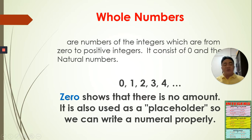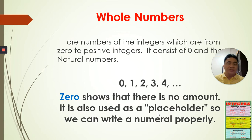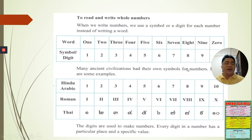Zero has no amount — there is no value for zero — but it helps us as a placeholder. You cannot name any other number, like two-digit or three-digit numbers, without the help of the placeholder, which is zero. You will see more about this in the next slides.